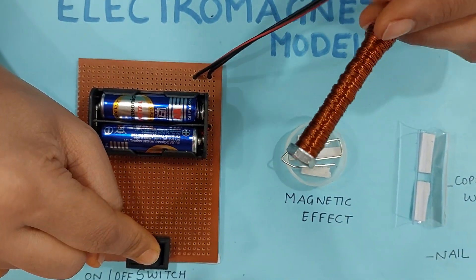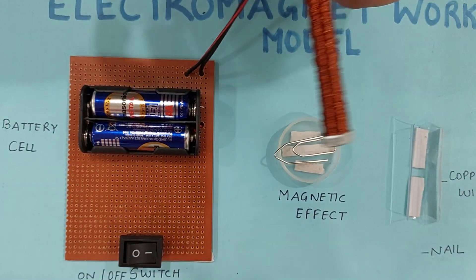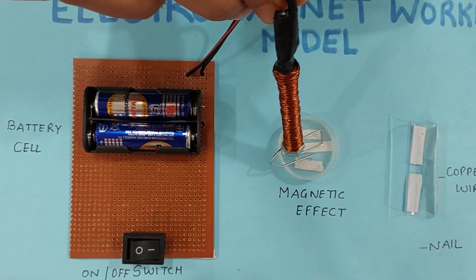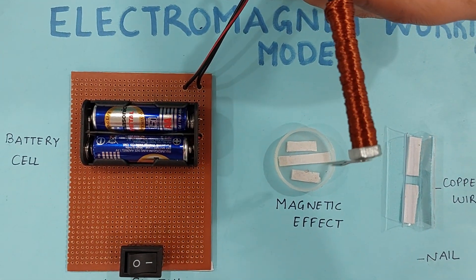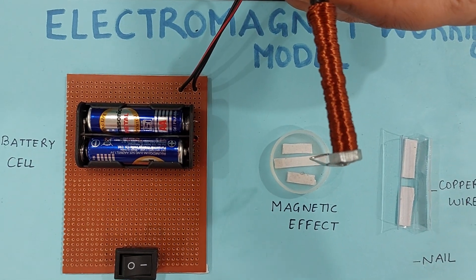I have switched it on. Now you can see this iron nail is attracting iron pin because I have passed electric current to it.